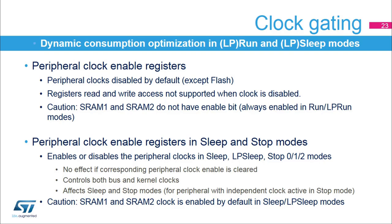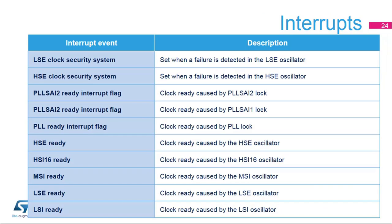The dynamic power consumption can be optimized by using peripheral clock gating. Each peripheral clock can be gated on or off in run and low-power run modes, except SRAM1 and SRAM2, which are always clocked in run and low-power run modes. By default, the peripheral's clock is disabled, except the flash clock, which is enabled by default. When a peripheral's clock is disabled, the peripheral's registers cannot be read or written. Other registers allow for configuring the peripheral's clock during sleep and low-power sleep modes, and this also affects stop 0, stop 1, and stop 2 modes for peripherals with an independent clock active in stop modes. These control bits have no effect if the corresponding peripheral clock enable is cleared. By default, SRAM1 and SRAM2 clocks are enabled in sleep and low-power sleep modes; if they are not needed, the SRAM clock enable bit should be disabled to reduce power consumption.